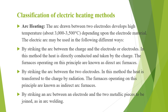Arc heating: the arc drawn between two electrodes develops a high temperature of the order of 3000 to 3500 degrees Celsius depending upon the electrode material. The electric arc may be used by striking the arc between the charge and the electrode or electrodes — in this method the heat is directly conducted to the charge. The furnace operating on this principle is known as a direct arc furnace.